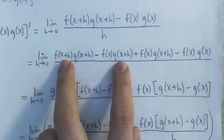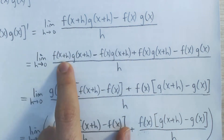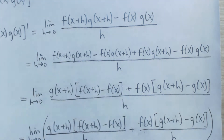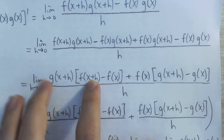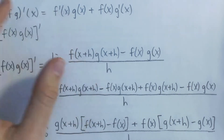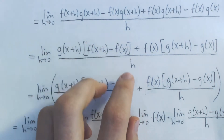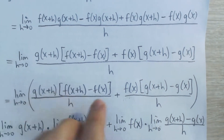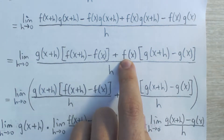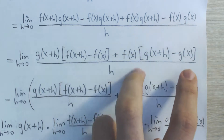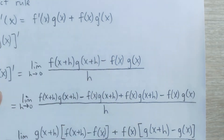Notice that the first two terms have a common factor of g of x plus h. We're going to factor that out, and what's left is f of x plus h minus f of x. We're trying to get f of x plus h minus f of x because that's the numerator of the derivative of f, and we have the h in the denominator. Similarly, both remaining terms have f of x in them. Factoring that out gives f of x multiplied by g of x plus h minus g of x — again, trying to get the numerator of the derivative of g for our final expression.